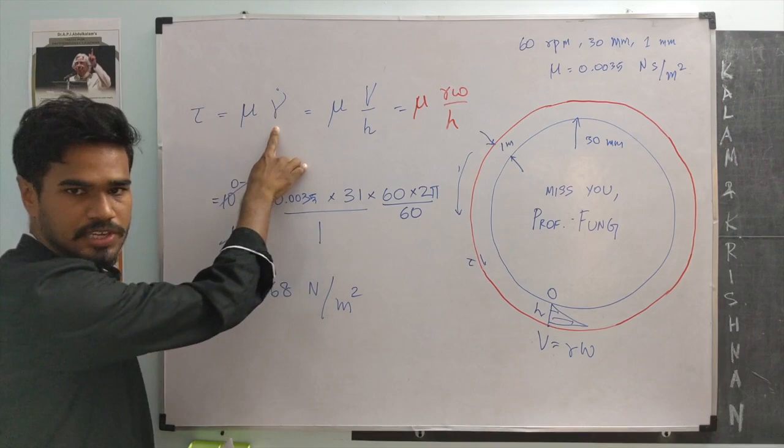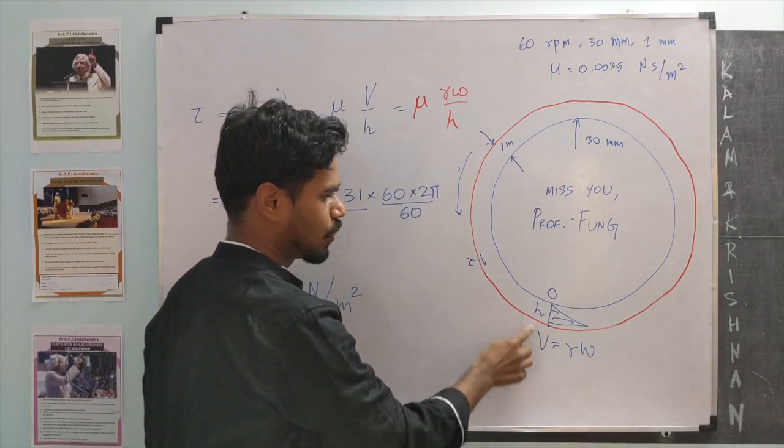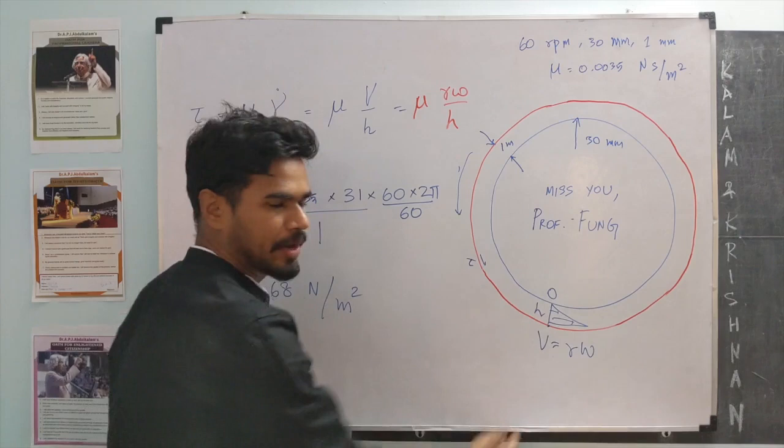And we have to recognize rate of shear strain is nothing but velocity gradient. For the given problem velocity gradient is v over h. And v can be written using rotational velocity or omega. So, this is a very simple problem. That is all I wanted to discuss with this video.